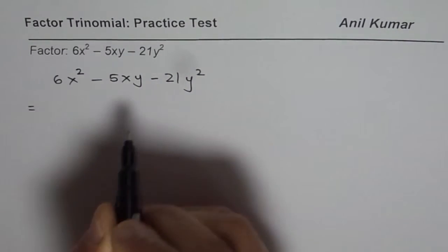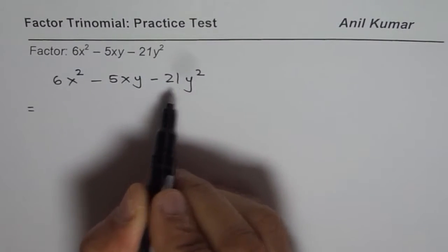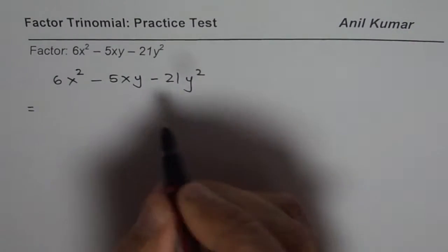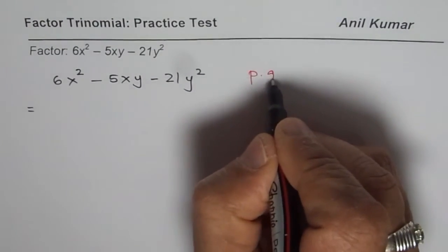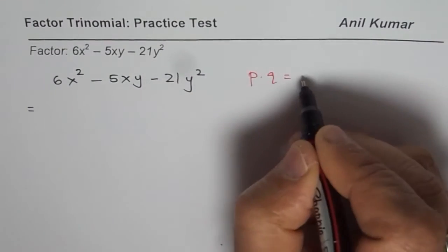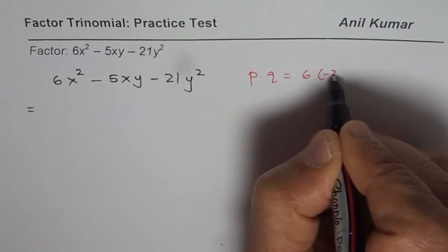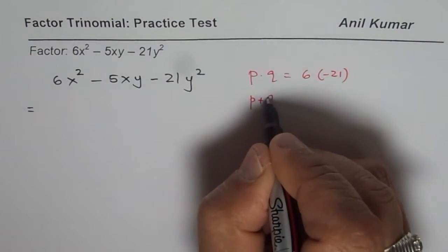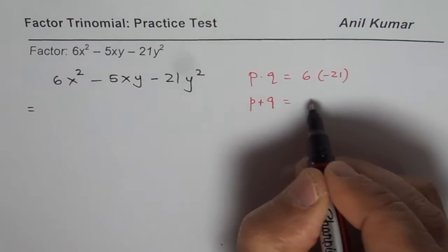Now to factor this, we need to find sum and product which gives us this combination where the product, let's say p and q are the two numbers, where the product is 6 times -21 and the sum of two numbers is -5.